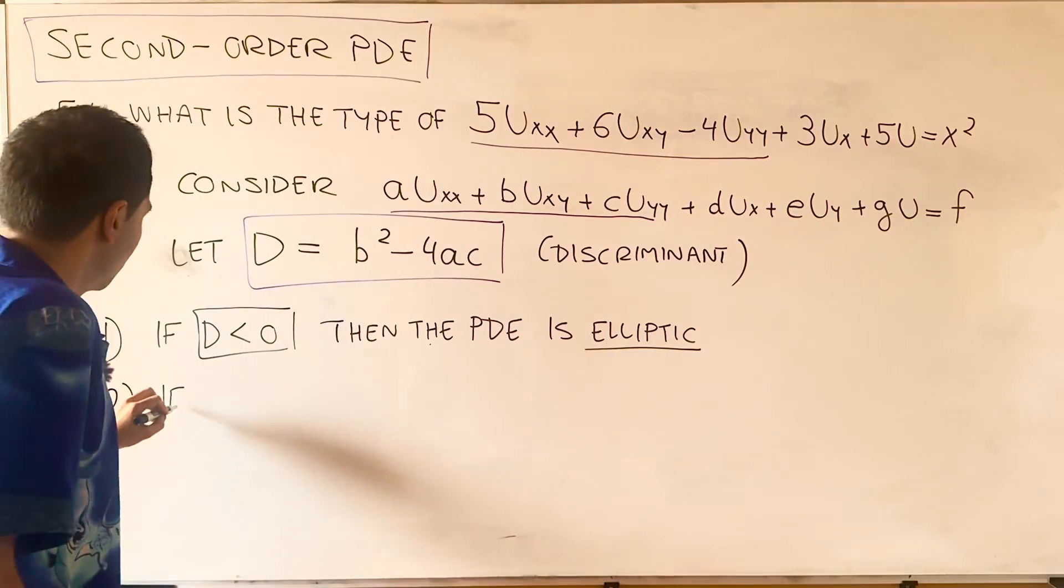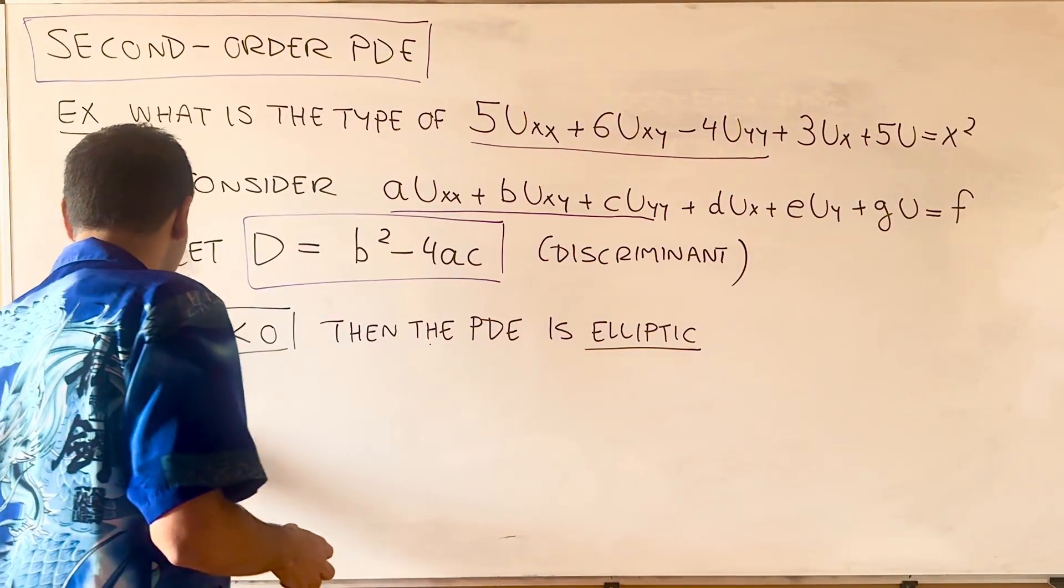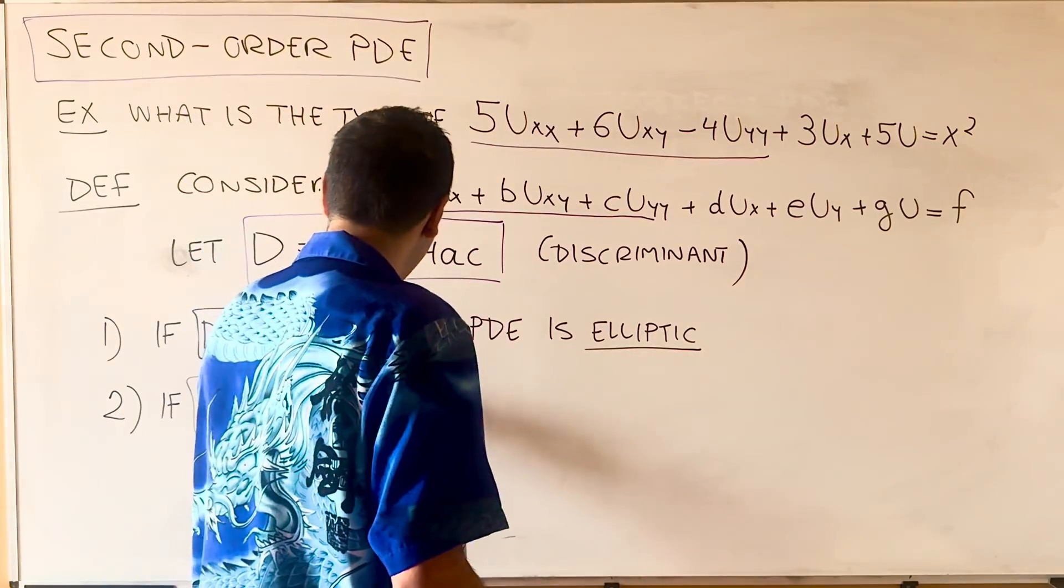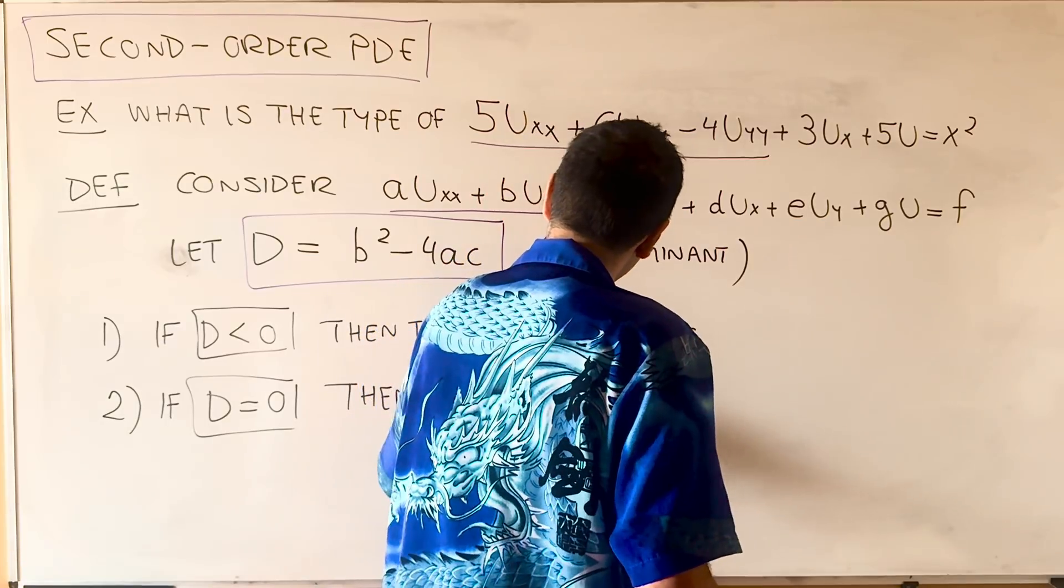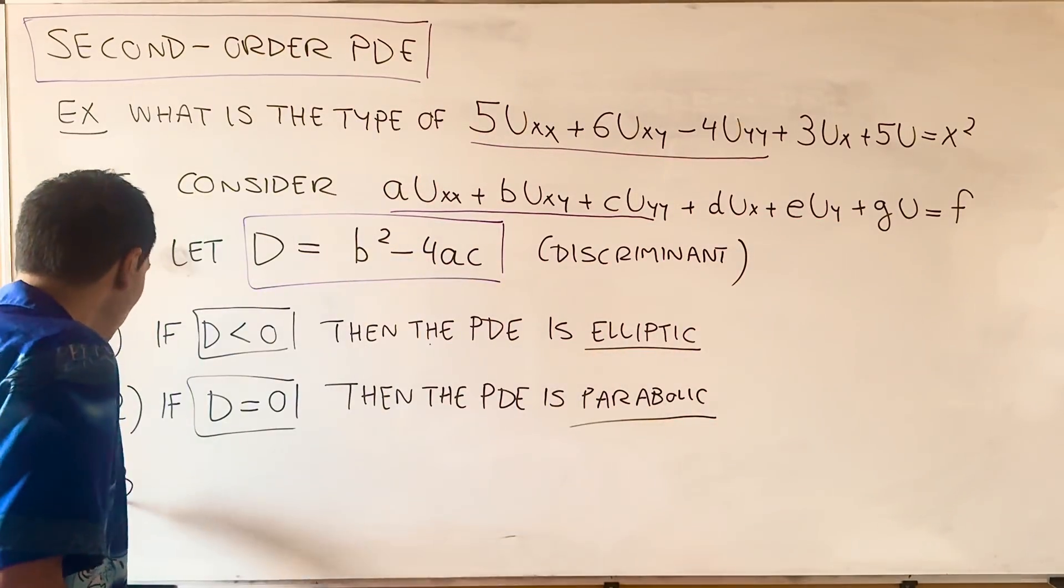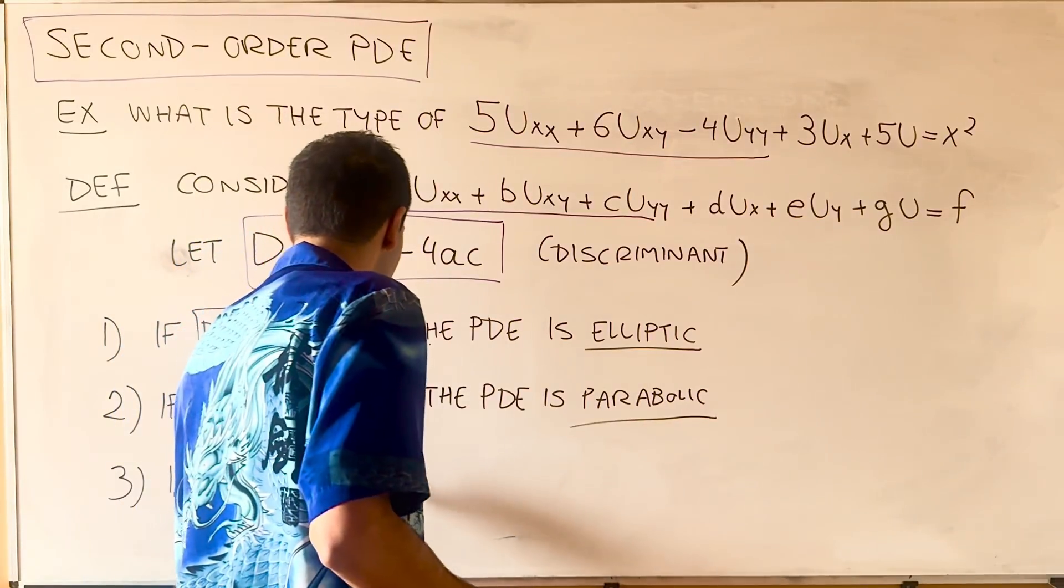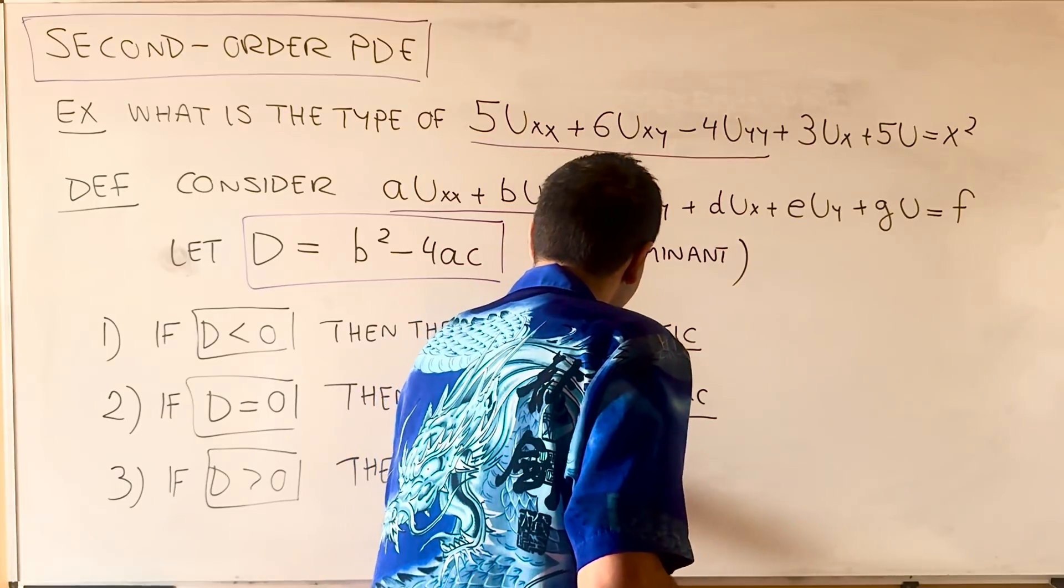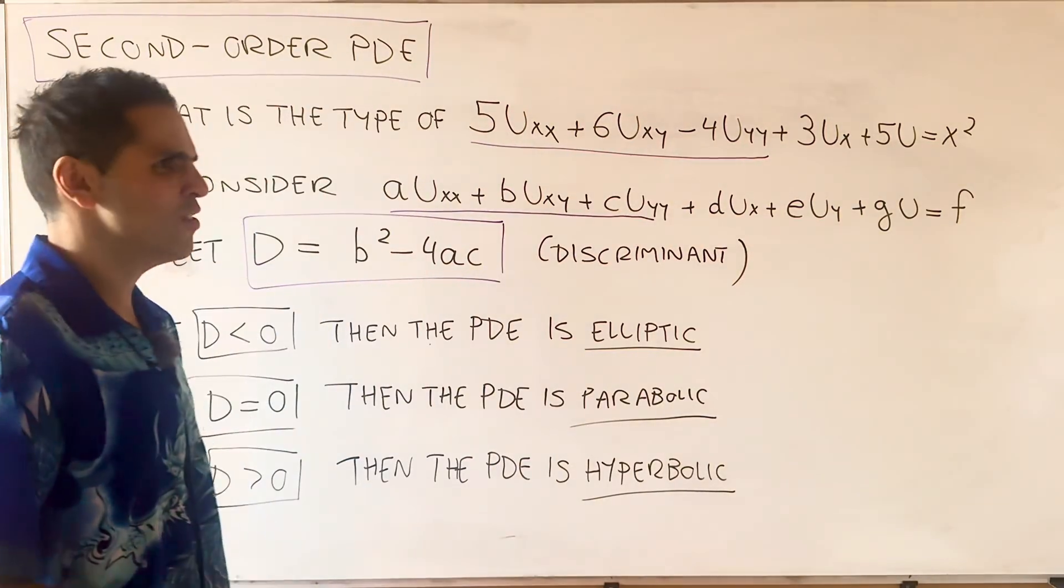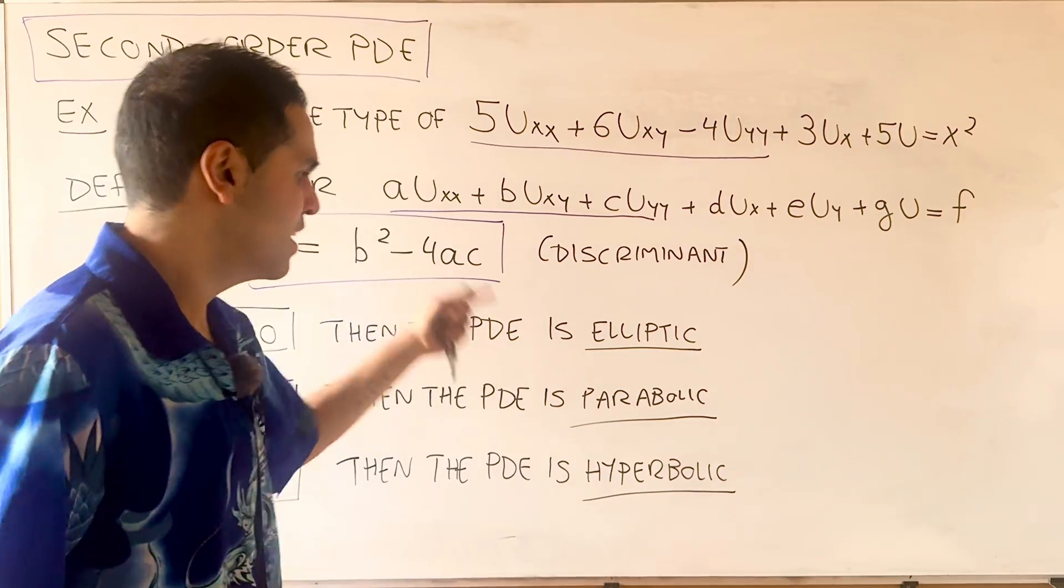If D is 0, then the PDE is parabolic. And finally, if D is positive, then the PDE is hyperbolic. You may wonder where you heard those terms before - they come precisely from conic sections: ellipses, parabolas, and hyperbolas.